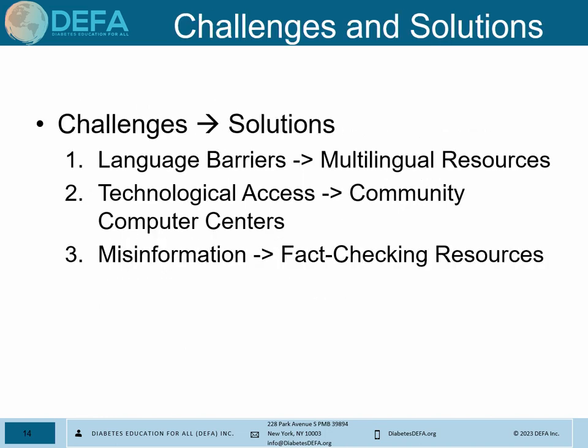What are some challenges and solutions? There are language barriers — addressed through multilingual resources. Second, technological access — providing and funding community computer centers for individuals who may not have a computer at home. Much of this applies particularly to low-income regions of the world, and we're also working on combating misinformation through fact-checking resources vetted by experts.